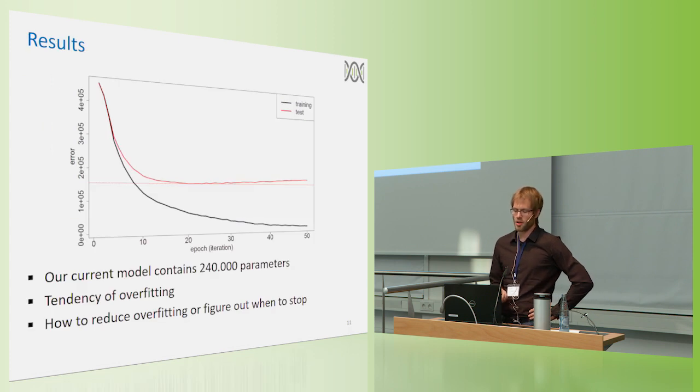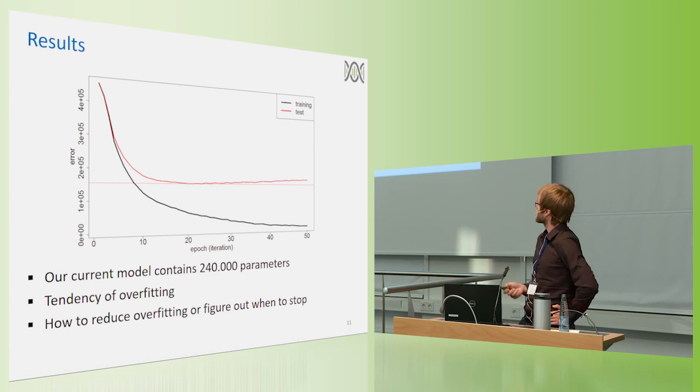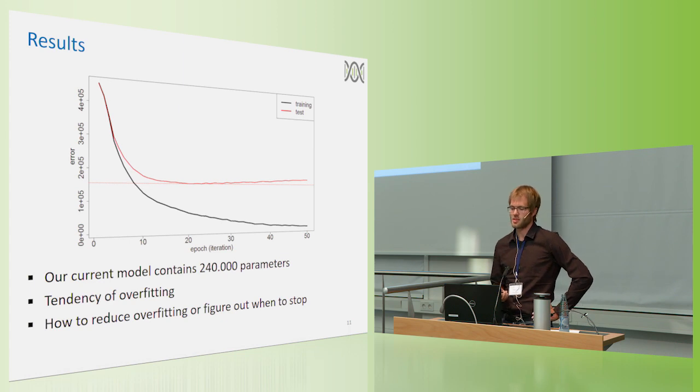When fitting our model, we quickly observed that whereas the model works quite well on the training data, basically error rates go down to zero, we quickly go into an overfitting process. So our test data is quite well explained after 20 epochs, or 20 iterations of each data point being used in the fitting procedure, but with more iterations, error rates go up again. So we had to do something against that.